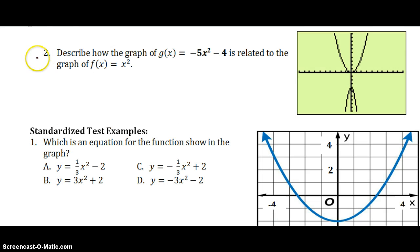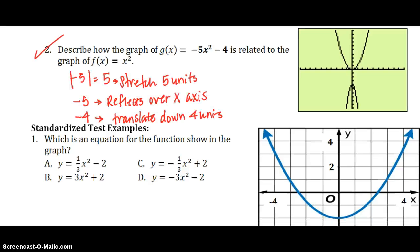You try number 2 to check your understanding. Please pause the video because I do want to tell you the correct answer. So try it on your own first. Pause right here. Okay, so the negative 5, if you think of the absolute value 5, is greater than 1. So that tells us that it's going to stretch. The negative tells us that it reflects over the x-axis. And then the negative 4 for our c-value tells us that it translates down 4 units.